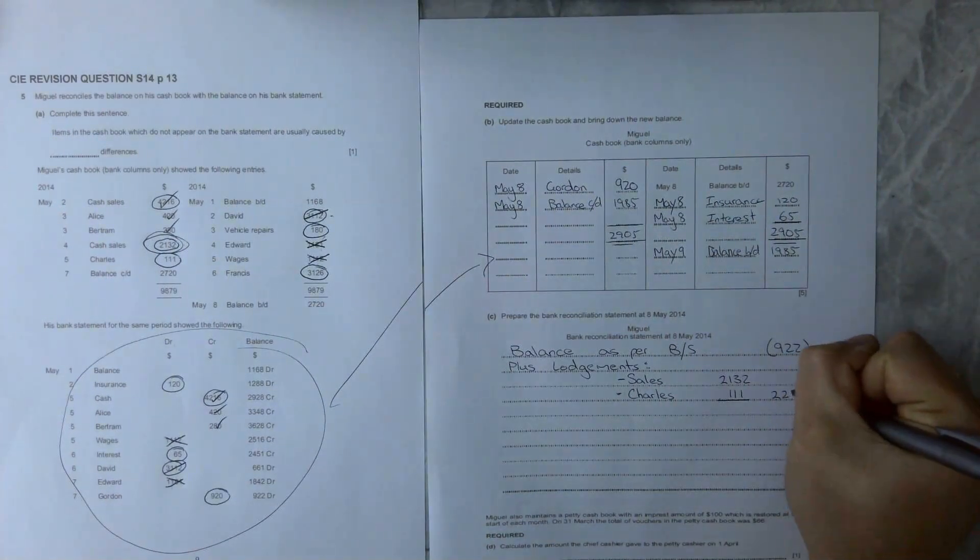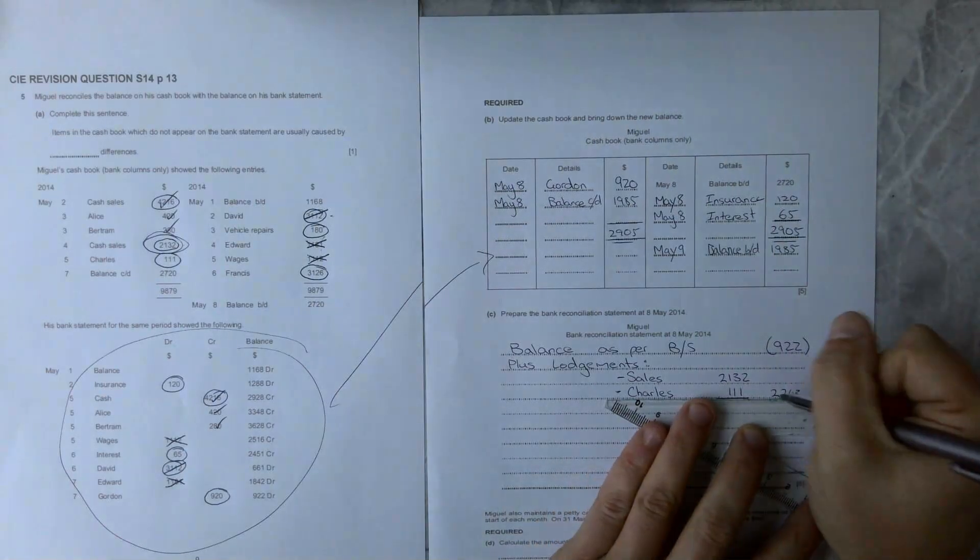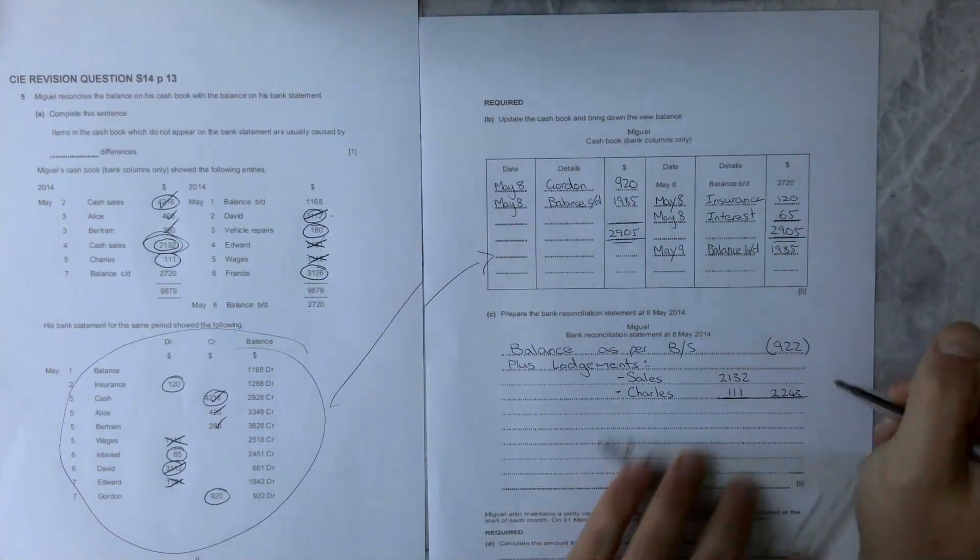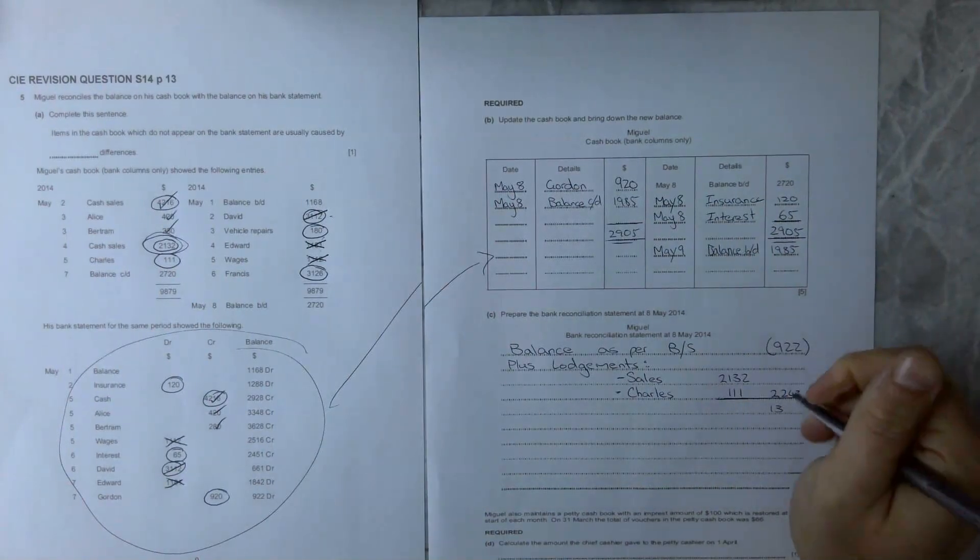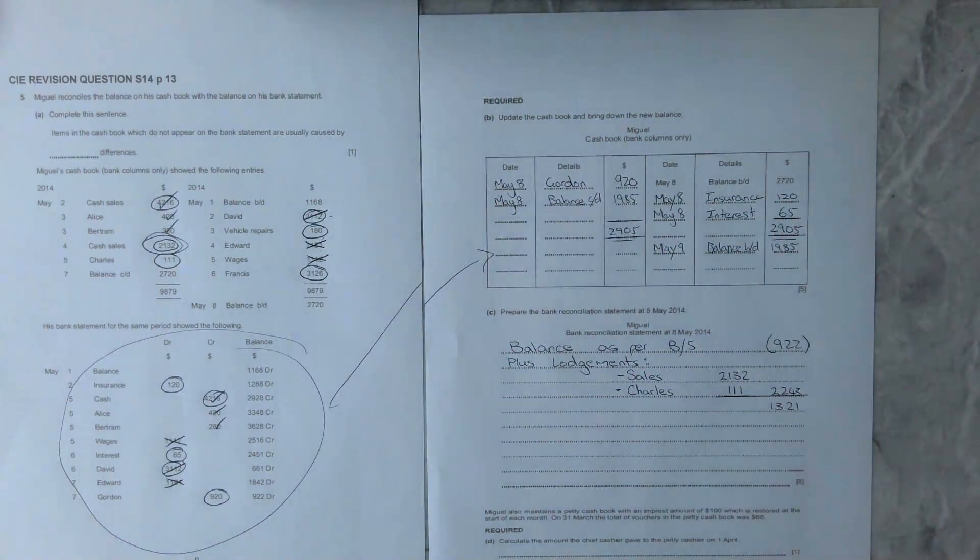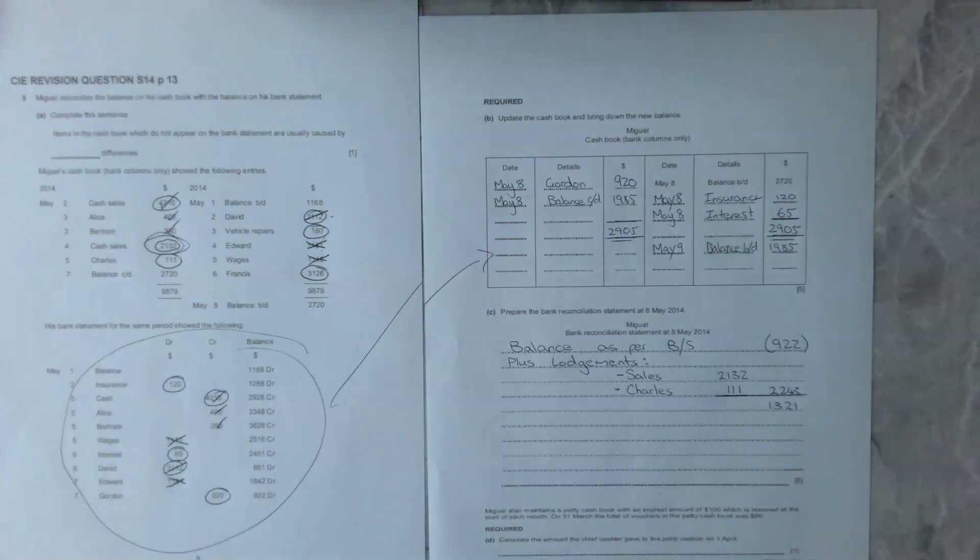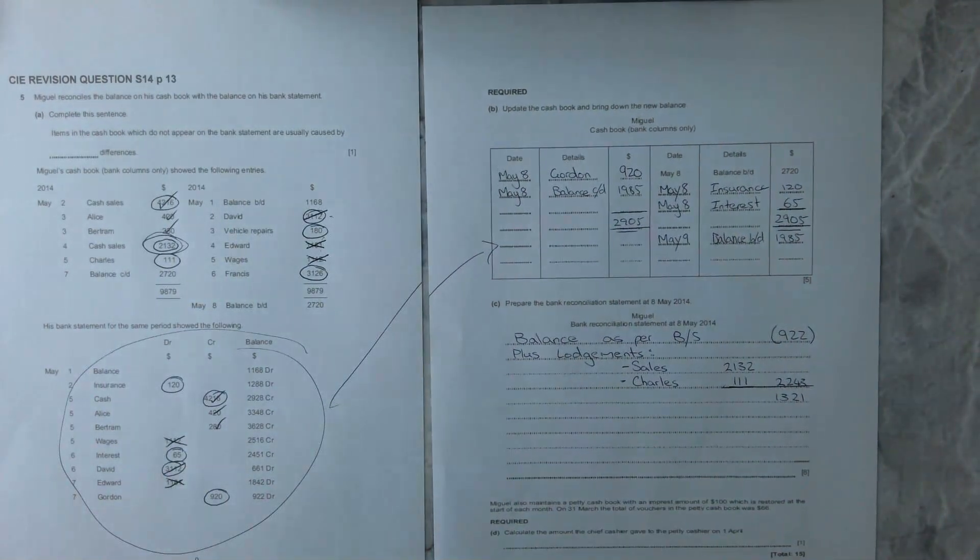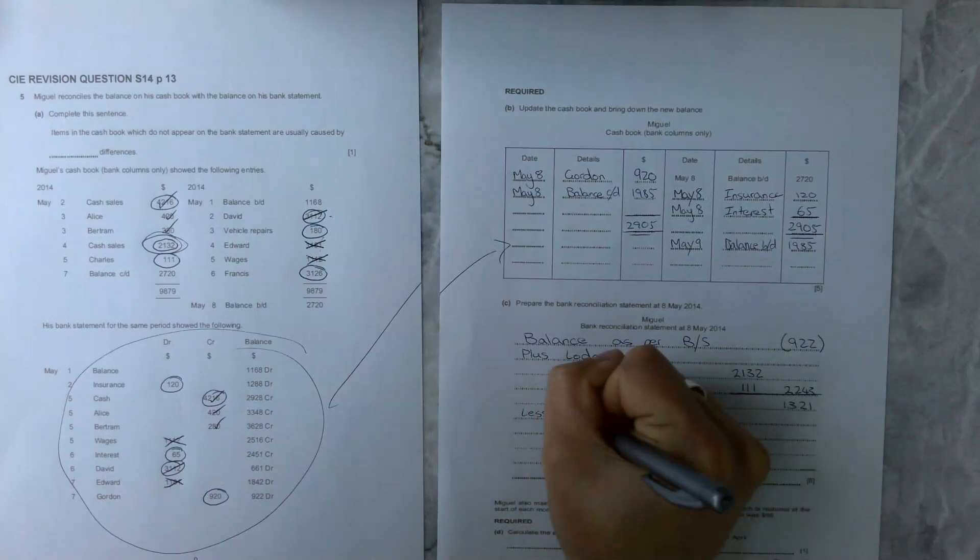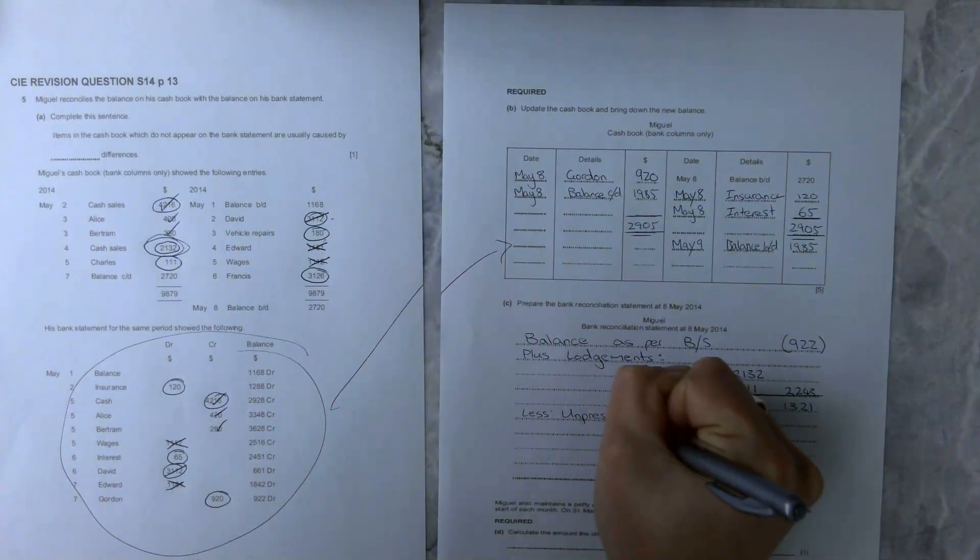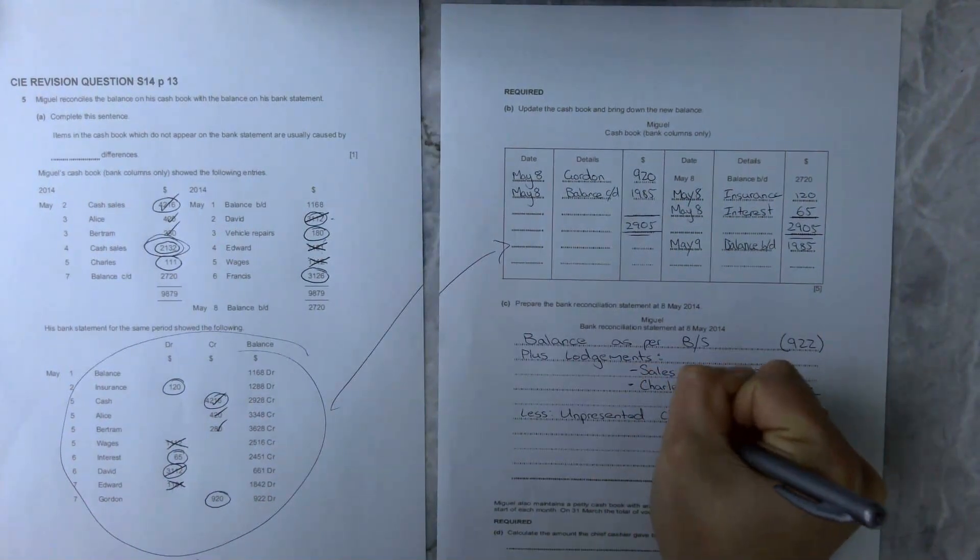What we're going to do is underline that, give us the total lodgements for the period at 2,243. That puts our balance back into our positives, which is good because our bank does like to be positive. But we're still not done yet because we need to minus our unpresented checks, so our checks not yet presented. So it's going to be less unpresented checks.